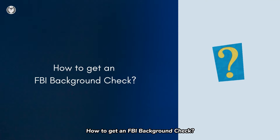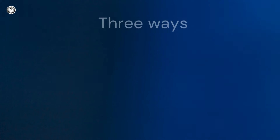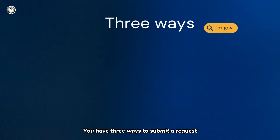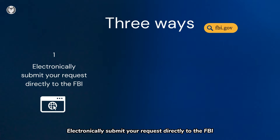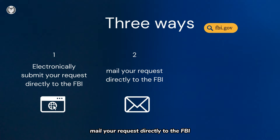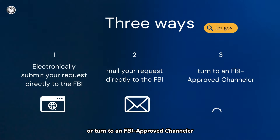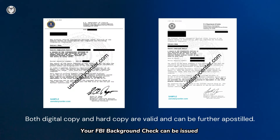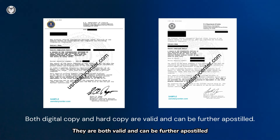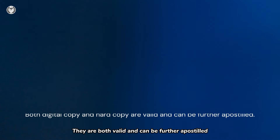How to get an FBI Background Check? You have three ways to submit a request: electronically submit your request directly to the FBI, mail your request directly to the FBI, or turn to an FBI-approved channeler. Your FBI Background Check can be issued in a digital copy, PDF format, or a hard copy. They are both valid and can be further apostilled.